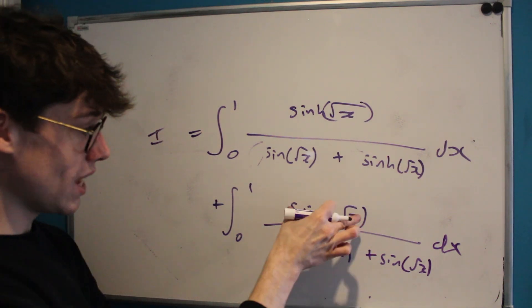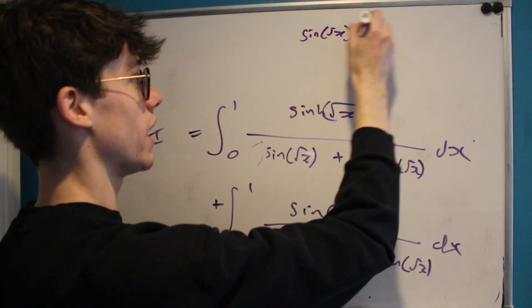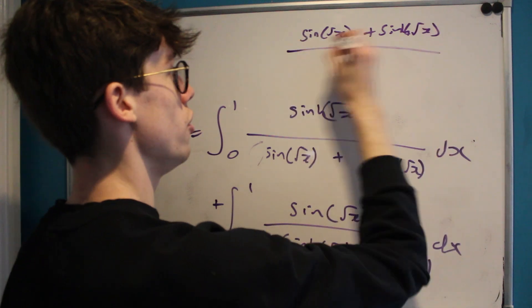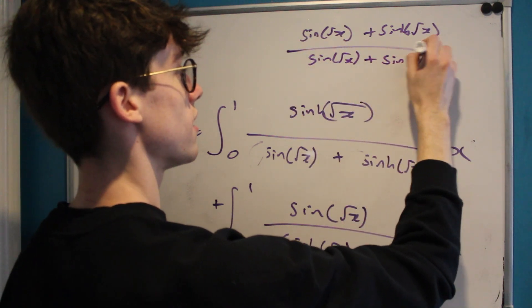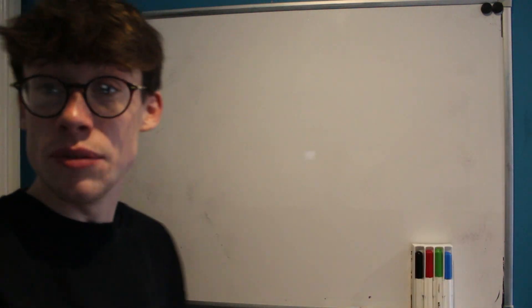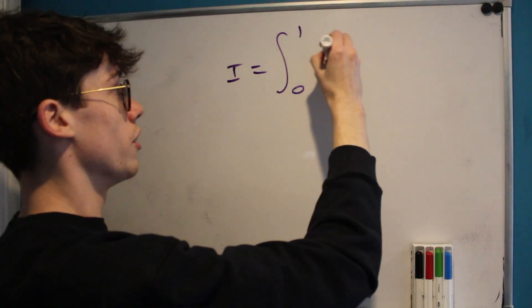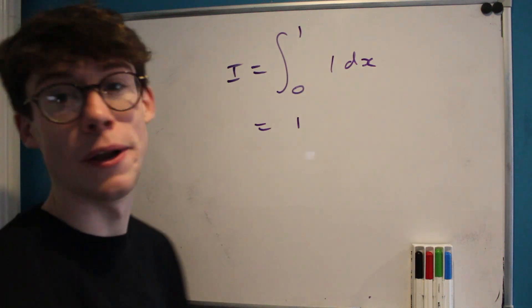This is where the magic happens, because when we add this integral to this integral our integrand becomes sine root x plus sinh root x over sine root x plus sinh root x, which of course simplifies to one. So this means that our I is equal to just the integral from zero to one of one with respect to x, which is of course just equal to one.